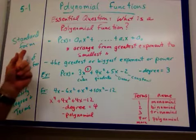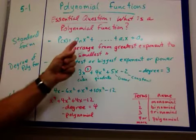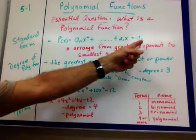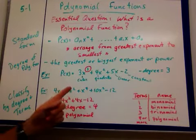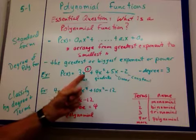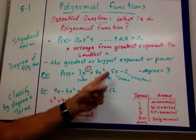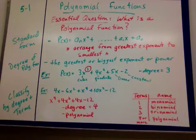Well, in standard form, it's a function arranged from the largest exponent down to the smallest to the constant term. An example could be this right here: 3x cubed plus 4x squared plus 5x minus 2. That would be a polynomial function.